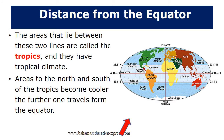Here is the equator. The areas that lie between these two lines are called the tropics, and they have a tropical climate. Areas to the north and south of the tropics become cooler the further you travel from the equator.